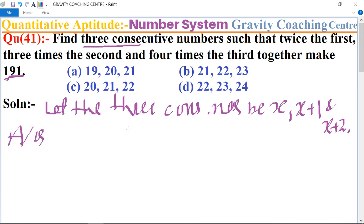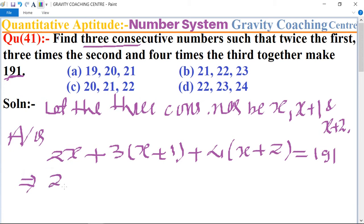Twice the first means 2x, plus thrice the second means 3 times (x plus 1), and four times the third number, so plus 4 times (x plus 2) equals 191. This implies that 2x plus 3x plus 3 plus 4x plus 8 equals 191.